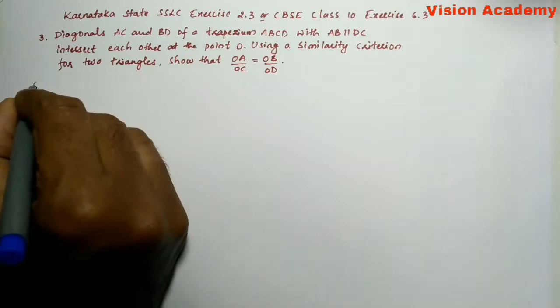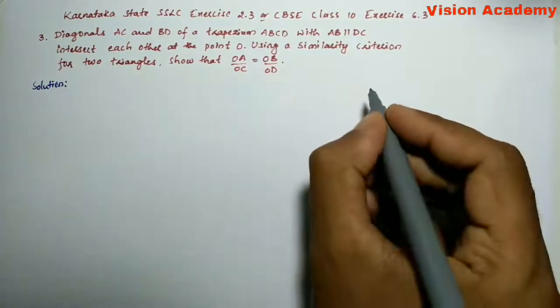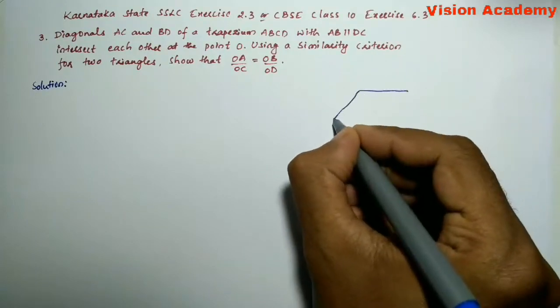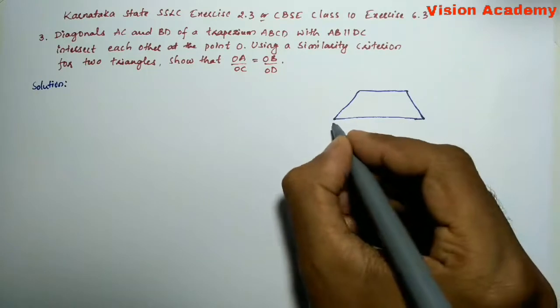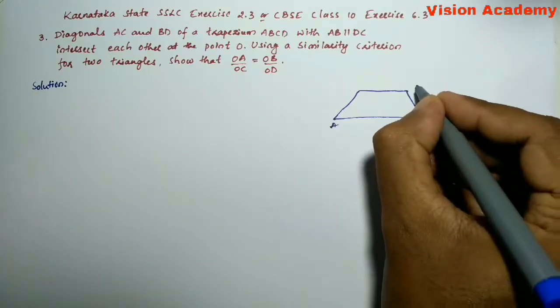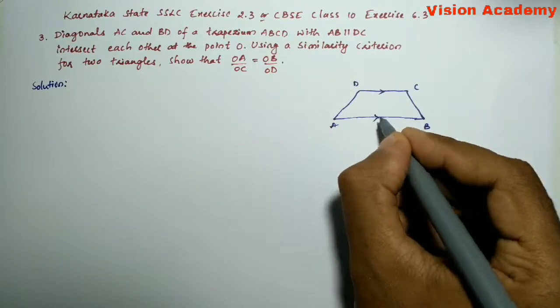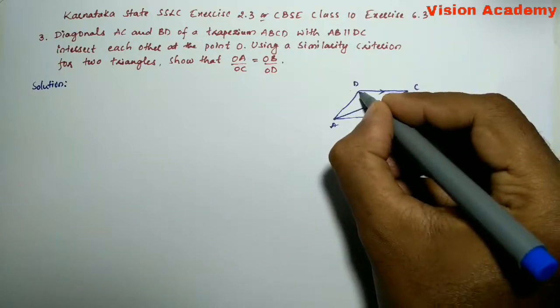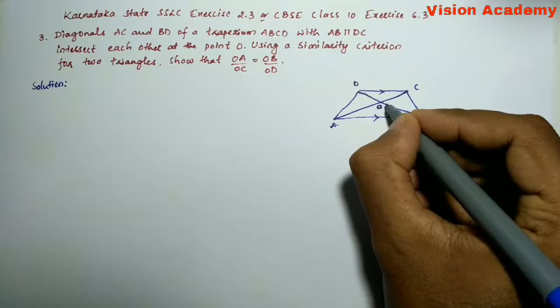Now let us find the solution for the given problem. So let us draw the trapezium A, B, C, D. Here DC is parallel to AB, and the diagonals AC and DB intersect at O.